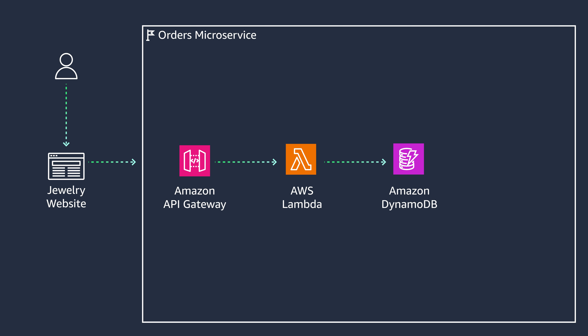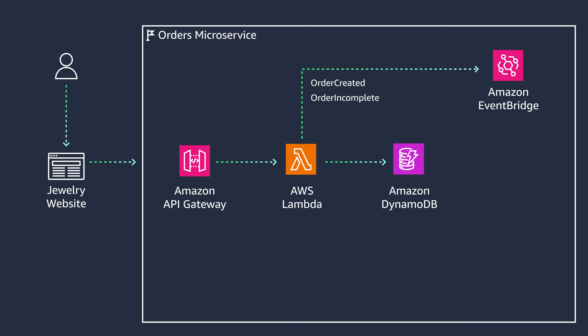Lambda then saves the order in an orders table within DynamoDB. You also publish events for successful or unsuccessful transactions. A NoSQL database like DynamoDB is an excellent choice for this microservice as it provides low latency access to your online orders.